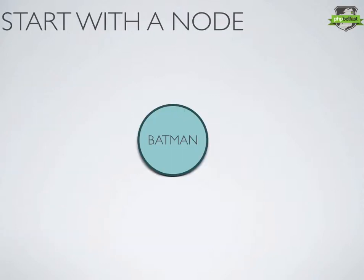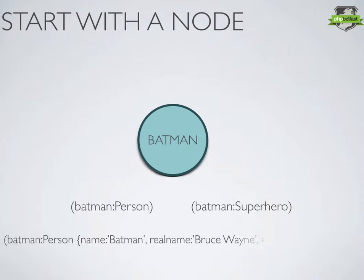Let's start with a single node. Here we have Batman. Batman is a single node entity — he might be a person, maybe he's a superhero. He's got properties: the name Batman, his real name Bruce Wayne, his superpower money, and lots of other properties we could define.